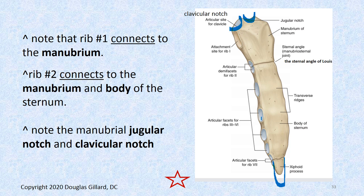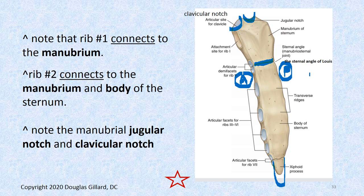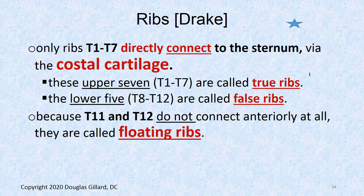The sternum has facets for articulation with all the ribs. Rib 2 is right at the sternal angle of Louis — you can find that bony prominence, slide your fingers off, and you're right at the second rib. There are two auscultation zones there: the aortic zone where you listen for the aortic valve, and the pulmonic zone for pulmonic valve murmurs. Only ribs 1 through 7 directly connect to the sternum — they're called true ribs because they have that true connection.